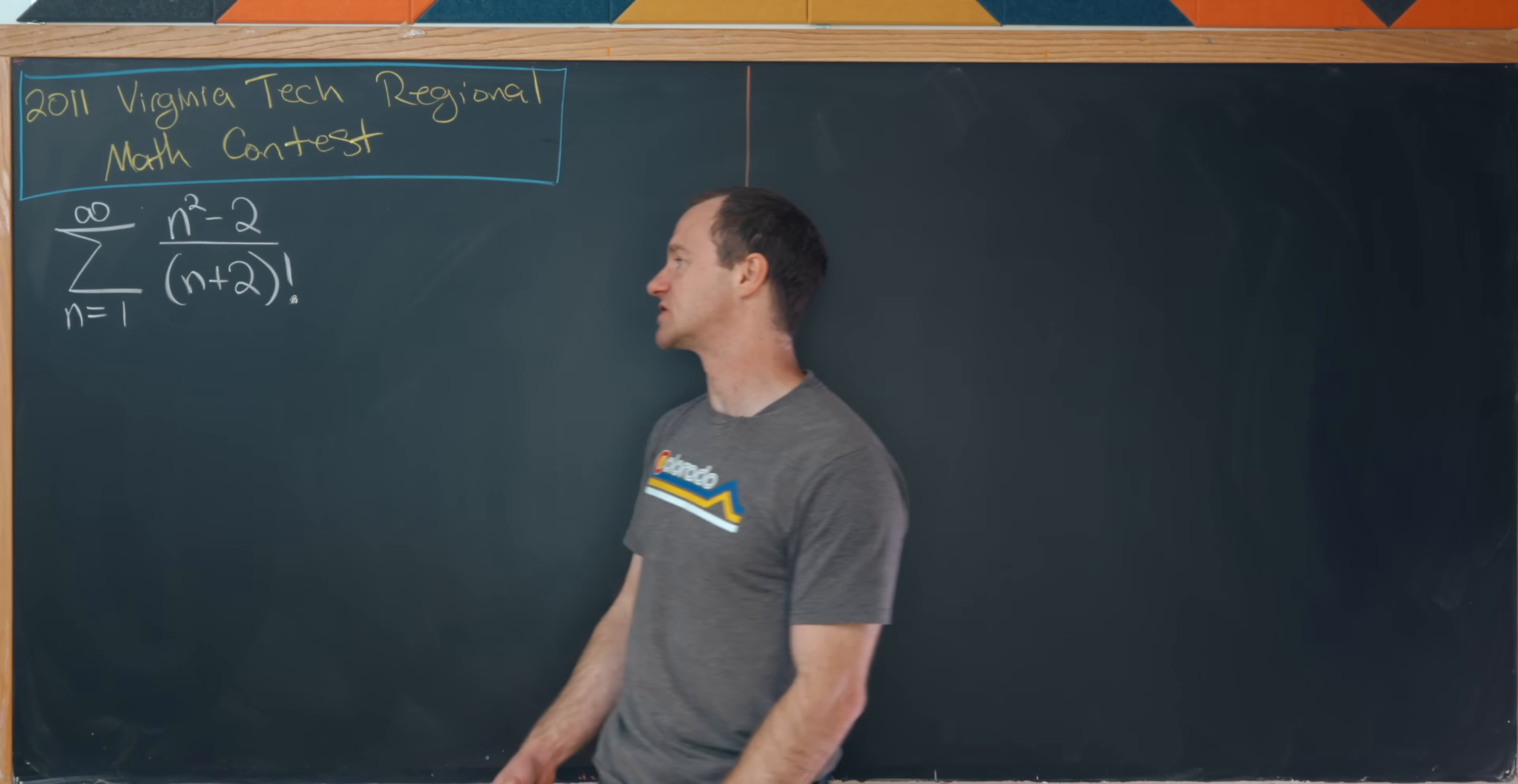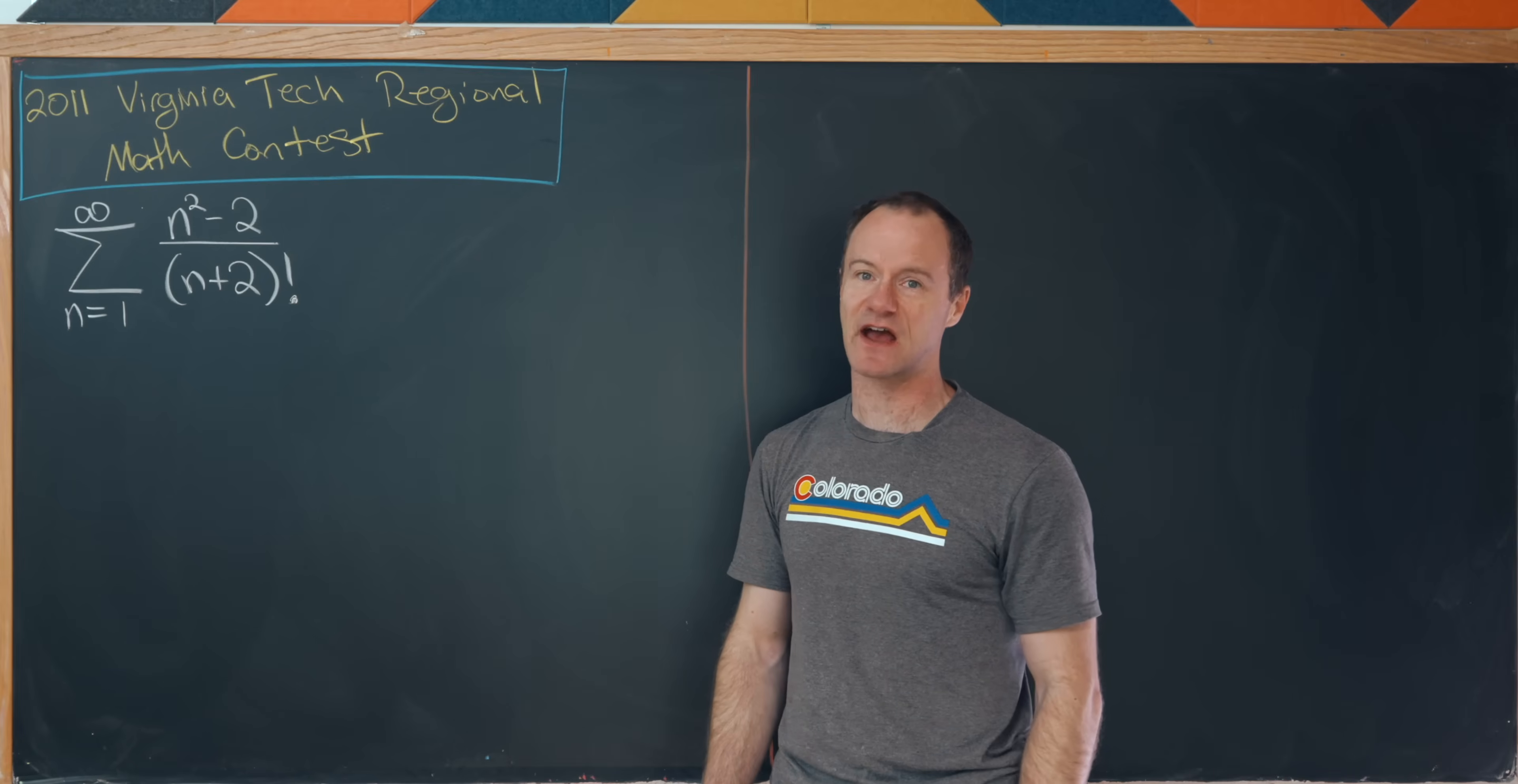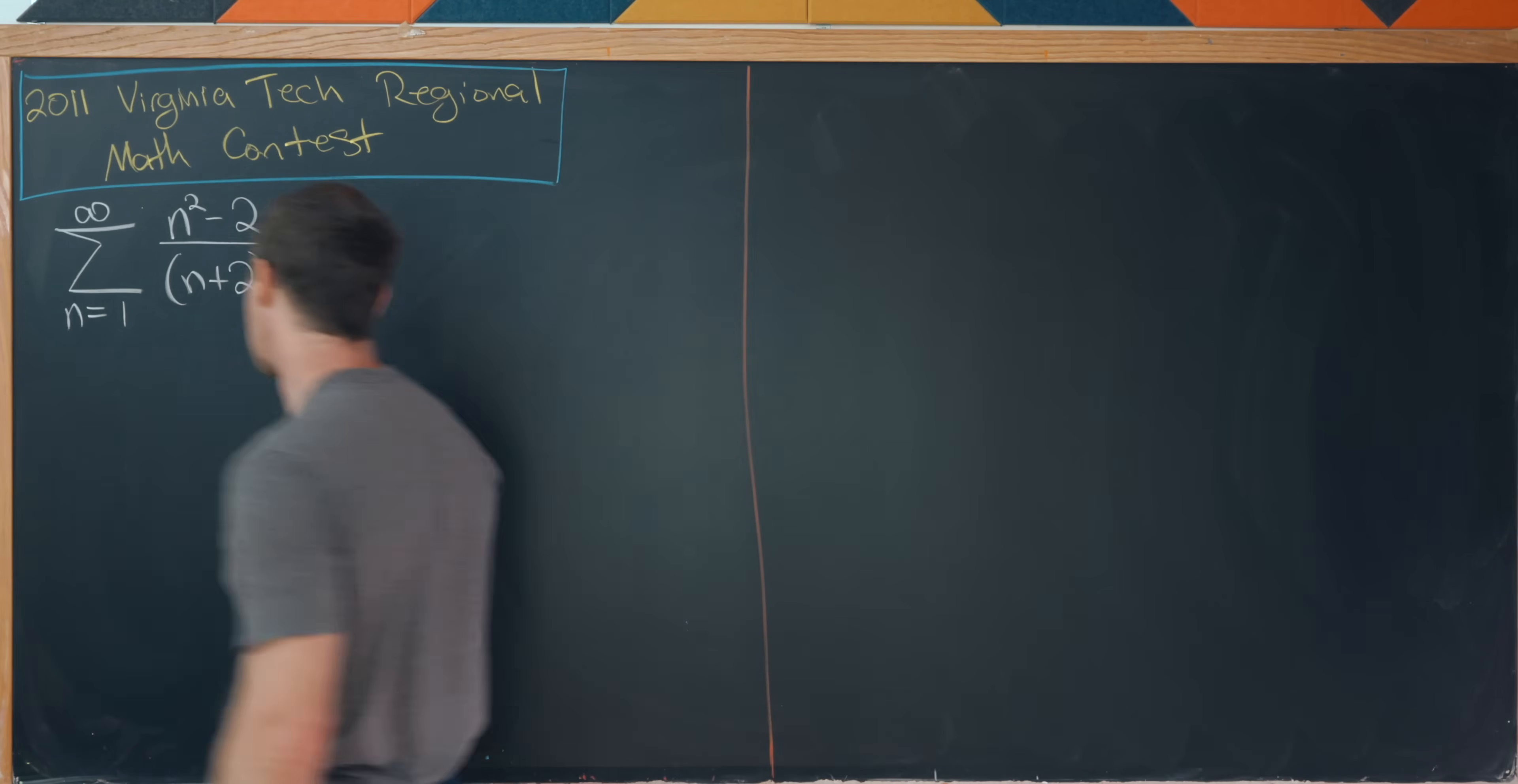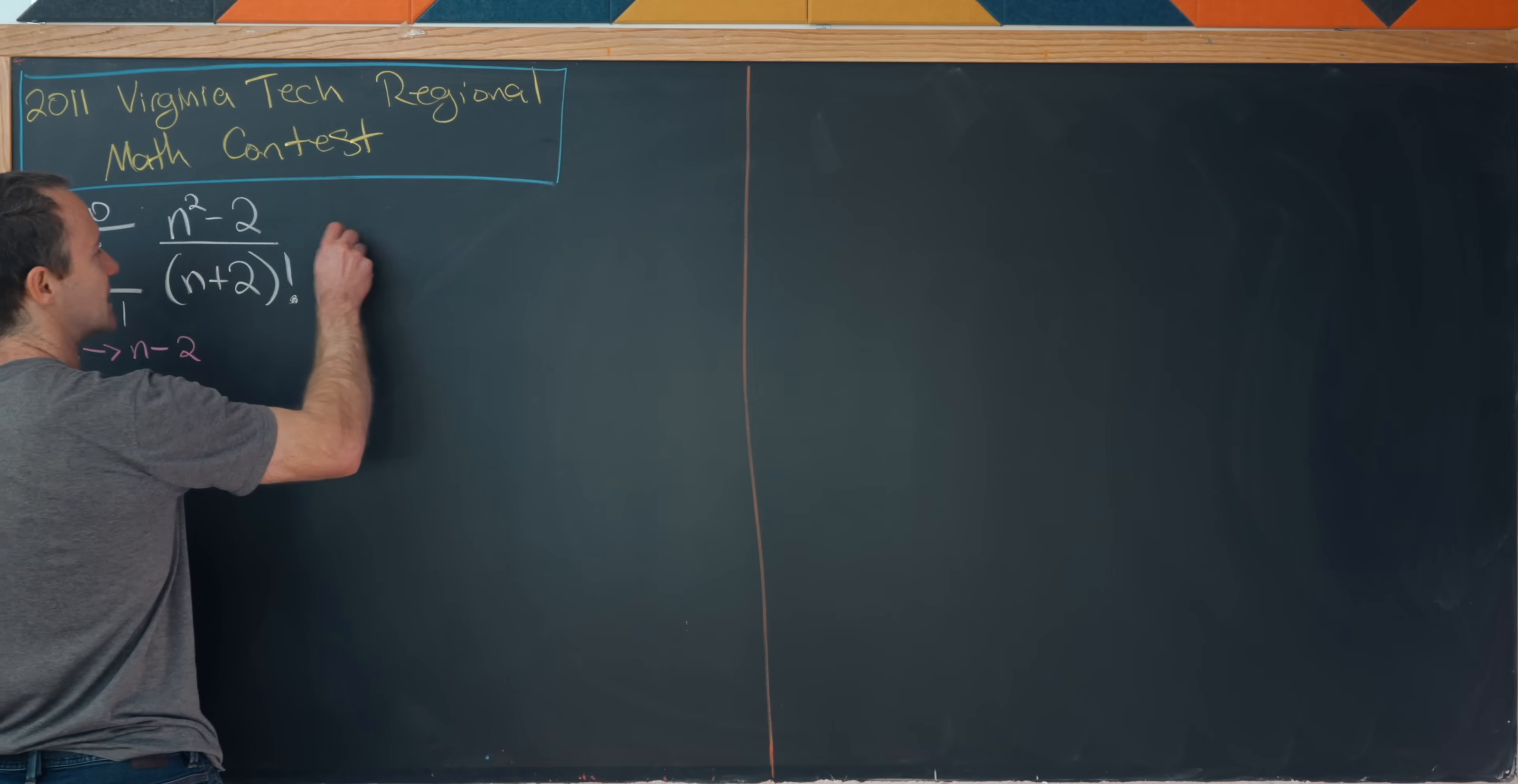So instead of having an n plus two factorial in the denominator, I have just an n factorial in the denominator. And I can do that by taking every appearance of n and replacing it with n minus two. Okay, so let's see what that gives us.